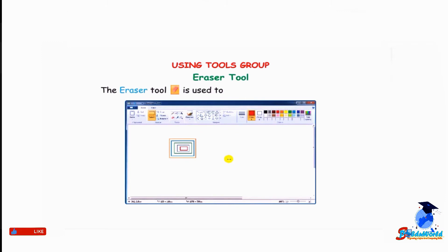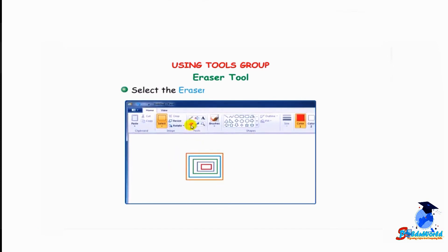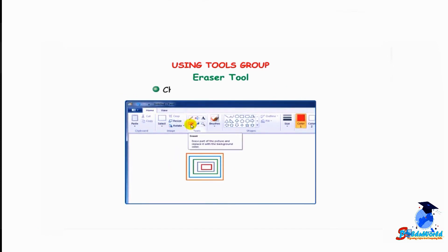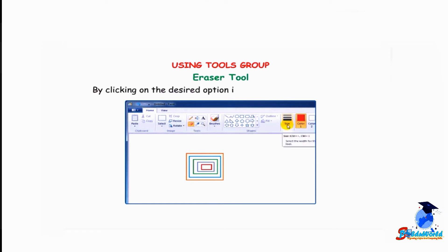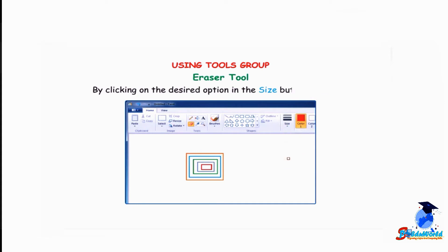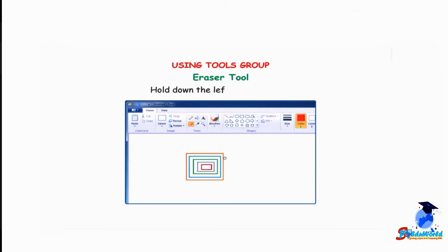The eraser tool is used to erase any part of a picture. Select the eraser tool from the tools group. Choose the size of the eraser by clicking on the desired option in the size button menu. A square will appear in the drawing area. Hold down the left mouse button and move it on the area that you want to erase.